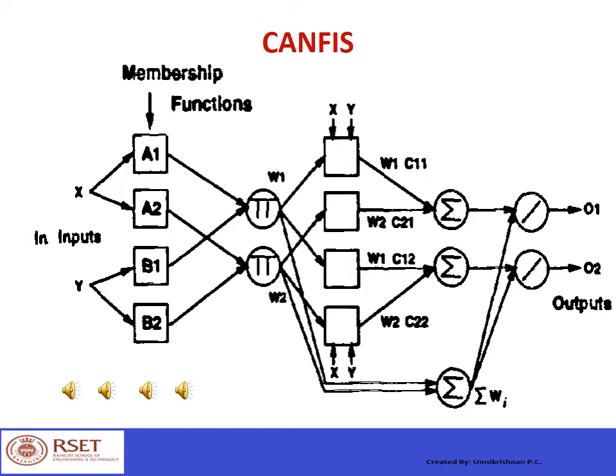CANFIS is simply constructed by placing as many ANFIS models side by side as the number of required outputs. In this figure you can see two ANFIS combined together to produce a CANFIS with two outputs. The function of neurons in each layer is exactly the same as that of ANFIS.